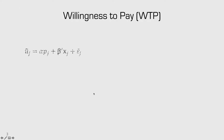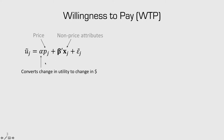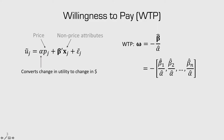I'll introduce willingness to pay by separating the price attribute from all the other non-price attributes. This coefficient alpha is telling me for every change in price my utility changes by alpha. So alpha is a direct conversion between utility and currency. I can use this alpha term to convert all of these other non-price attribute coefficients from utility into currency. I compute willingness to pay by simply dividing the vector of beta coefficients by the price coefficient alpha.